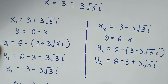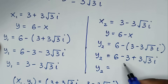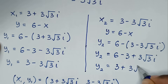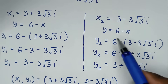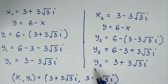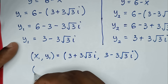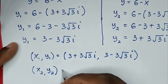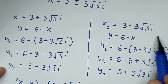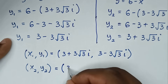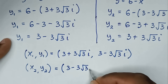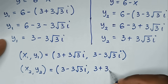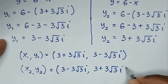So y₂ is equal to 3 plus 3 square root of 3i. The second solution is x₂ comma y₂ equals bracket 3 minus 3 square root of 3i, comma 3 plus 3 square root of 3i bracket.